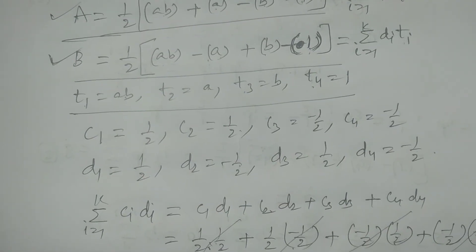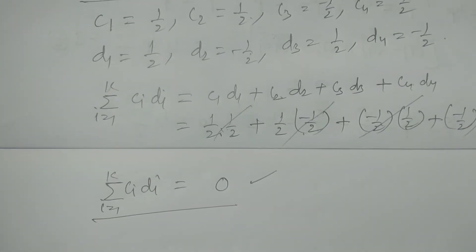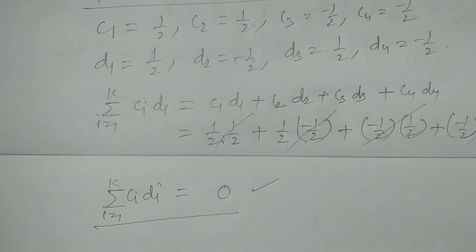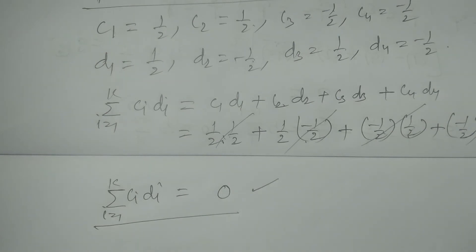Similarly, we can prove that A and AB, and B and AB are also orthogonal contrasts in the two-squared factorial experimental design. It is proved that the main effects A, B and interaction effect AB are mutually orthogonal contrasts in the two-squared factorial experimental design. This is the concept of orthogonal contrasts of various effects. Thank you.